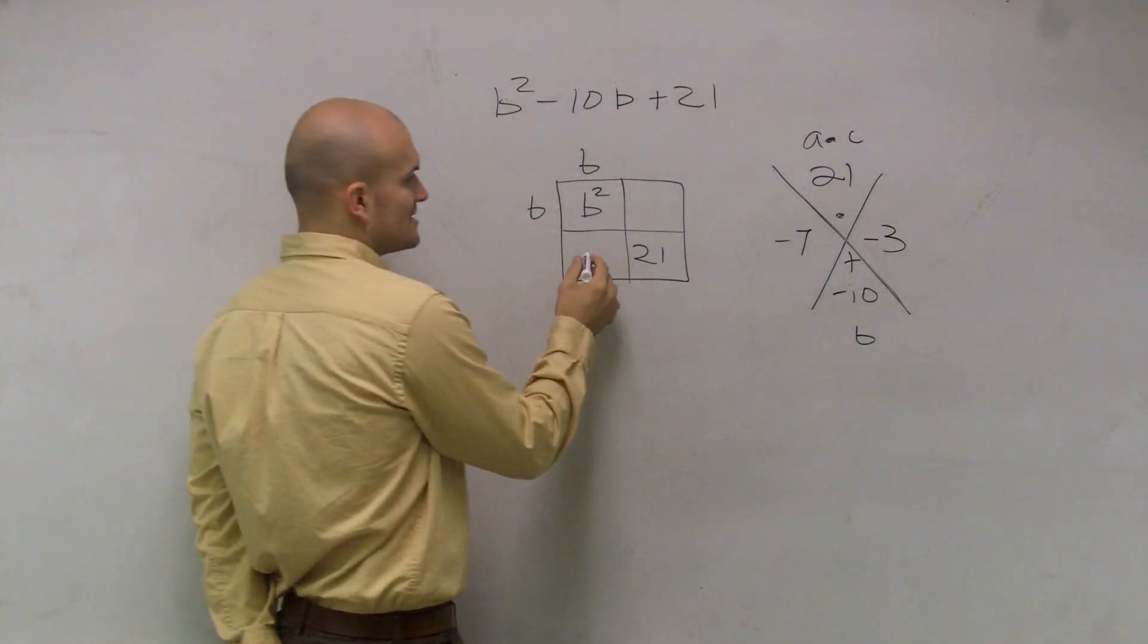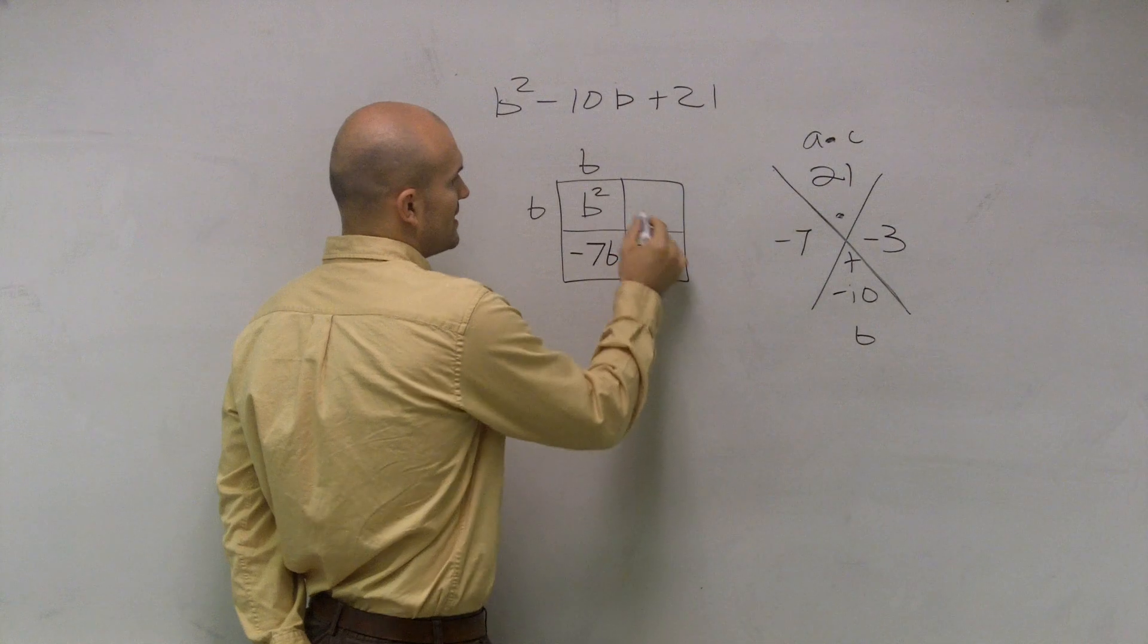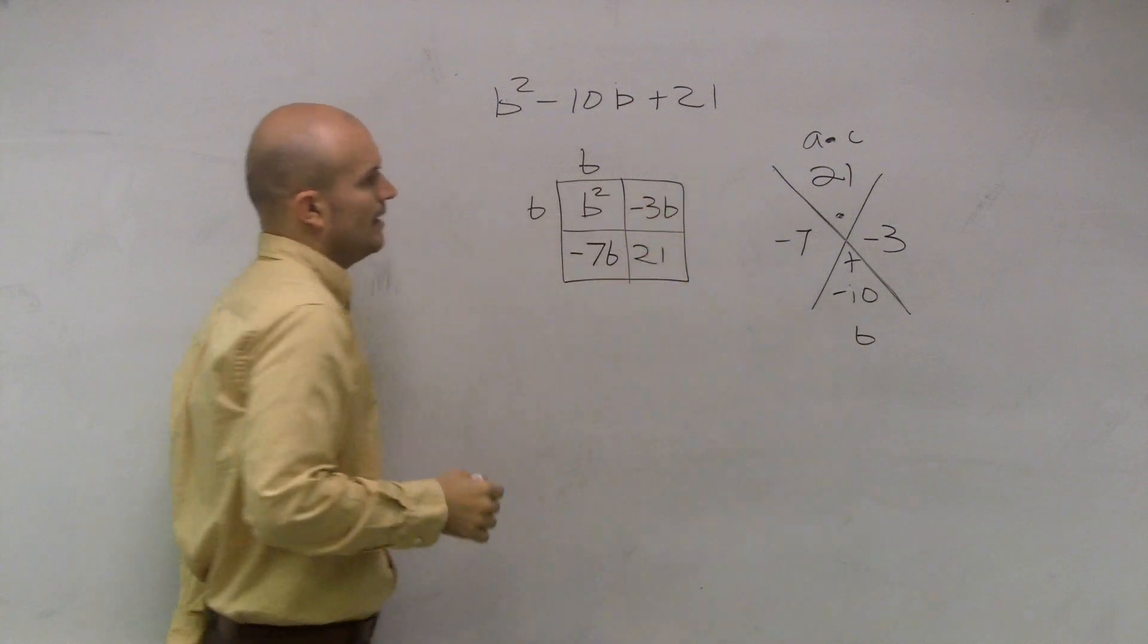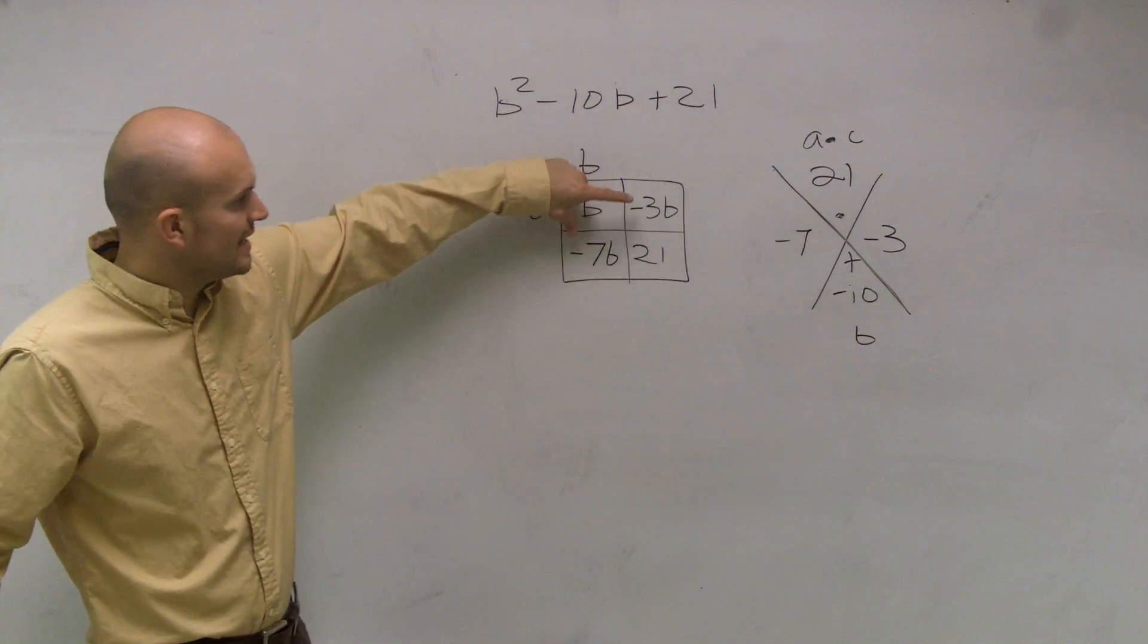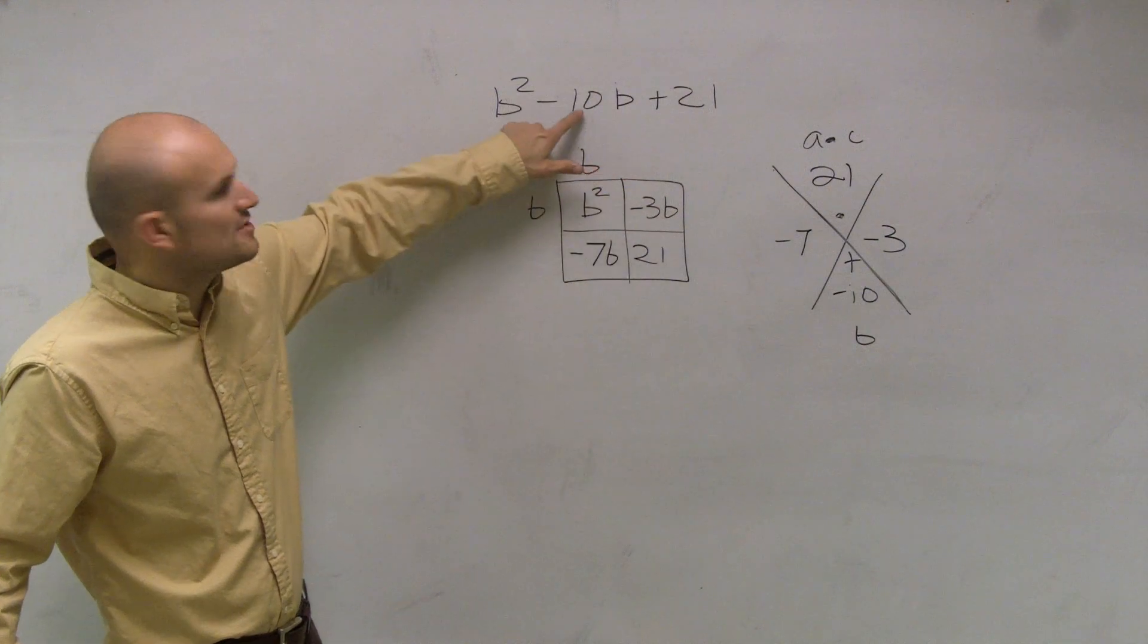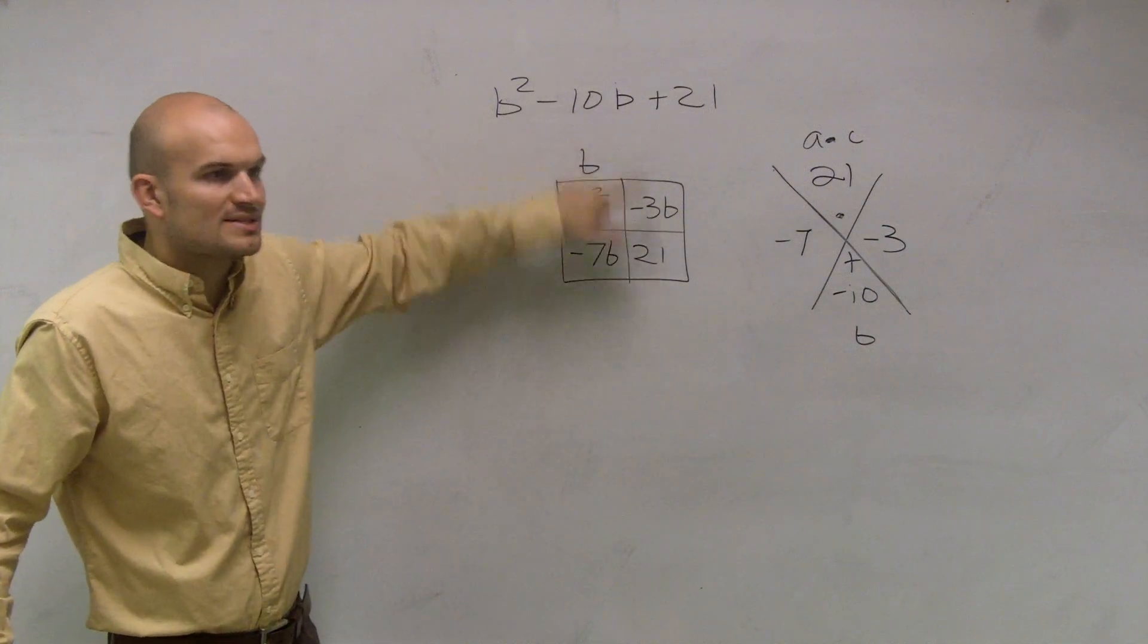So what that means is, I can rewrite this as a negative 7b and a negative 3b. And if I add these two together, negative 7b plus negative 3b, that gives me negative 10b, which represents the whole area.